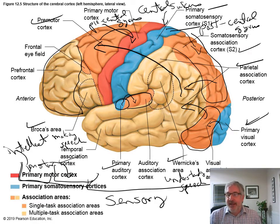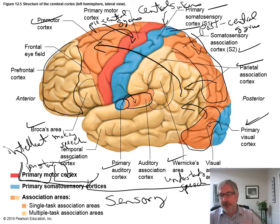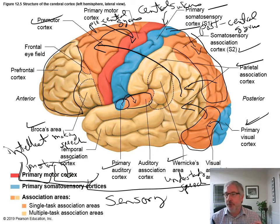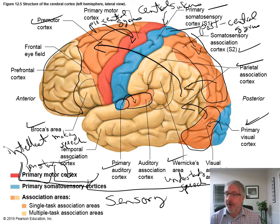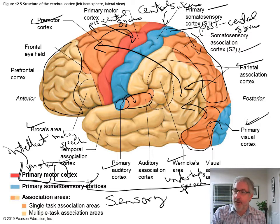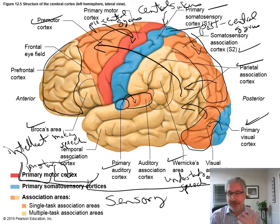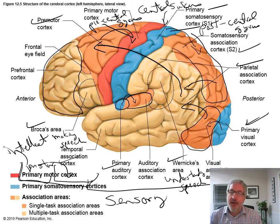So you understand speech back here in Wernicke's area, and then you have a little area in front — Broca's area — in which you control the muscles that control the tongue, the mouth, the vocal folds, and air going across the vocal folds, so that you can increase volume or increase pitch, take pitch up or down, you can sing. What I'm doing right now — talking — means Broca's area is working real hard.